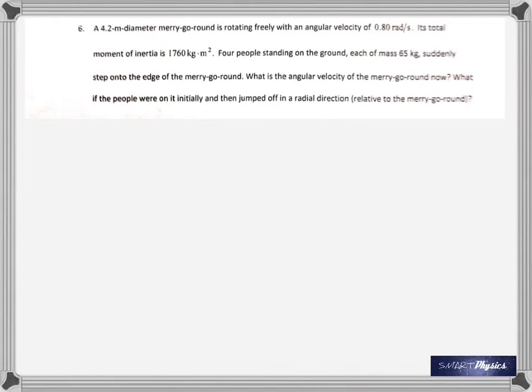Since we have done a similar problem, I'm not going to give you much time. Again, the same kind of situation, but how many people do we have here? Four people standing on the ground, each of mass 65 kilograms, suddenly step onto the edge. Together they step onto the edge. What is the angular velocity of the merry-go-round?